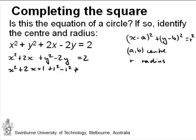And I'll do the same for the y. So I'll write this as y squared minus 2 times y times 1 plus 1 squared minus 1 squared. So I'm adding and subtracting the same number, meaning I'm not changing anything. And that's equal to 2.